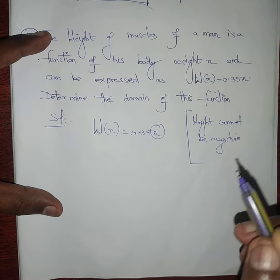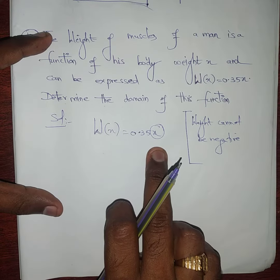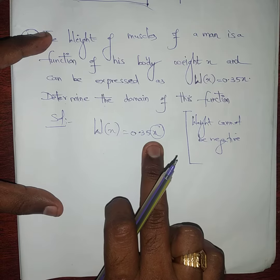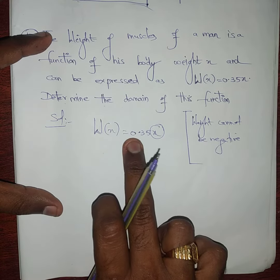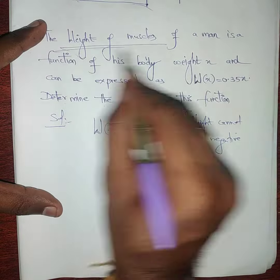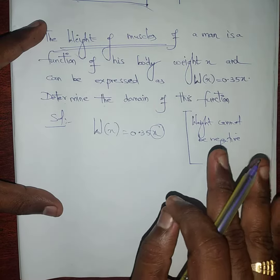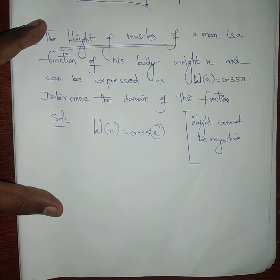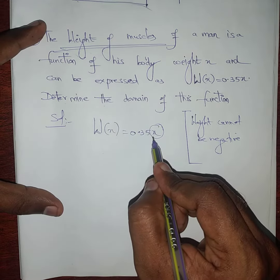So I need to put a value of x which is positive. Suppose I am going to put a value of 0. Any weight equal to 0, it is impossible. Weight of muscles, muscles weight cannot be 0. That will be some weight, even gram. That will be some gram weight, so I can't put 0 also.